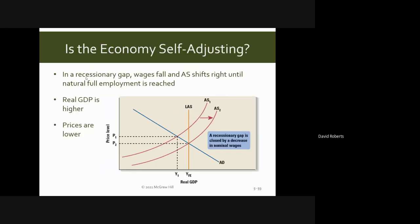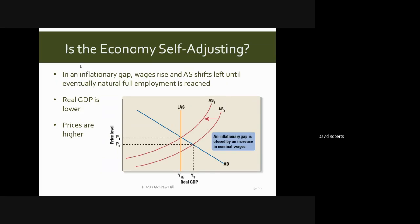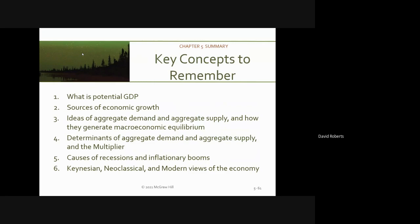In a recessionary gap, wages fall and aggregate supply shifts right until full employment is reached again. Real GDP is higher and prices are lower. In an inflationary gap, which is to the right of the long-run aggregate supply curve, GDP goes down and you get prices that are higher and wages rise. Here is a summary of chapter number five.